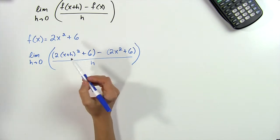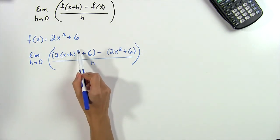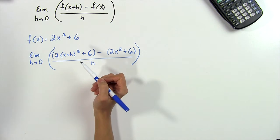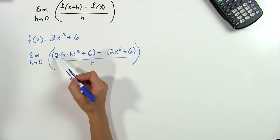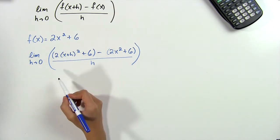Our next step is to expand this (x+h) squared, which will be x squared plus 2xh plus h squared, and multiply it by the 2, which will then allow us to combine like terms.